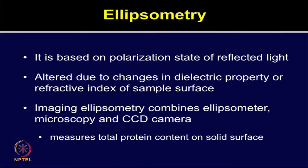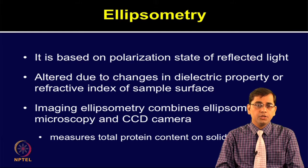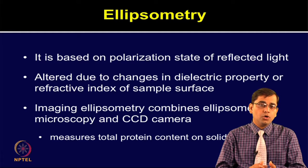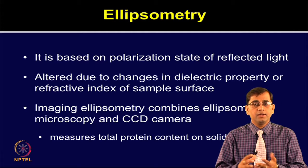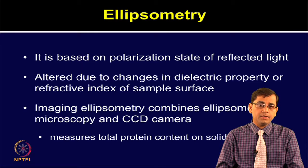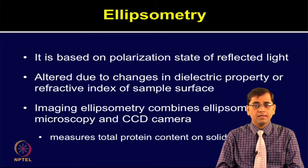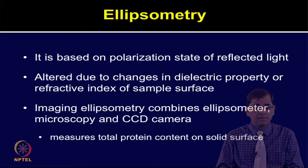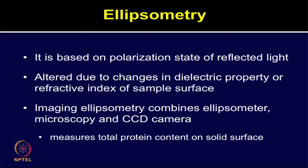Ellipsometry is based on the polarization state of the reflected light, which is altered due to changes in the dielectric property or the refractive index of the sample surface. Imaging ellipsometry combines an ellipsometer, microscopy, and CCD camera, which can measure the total protein content on a solid surface.